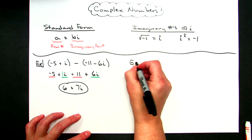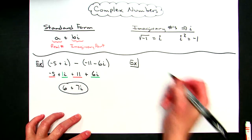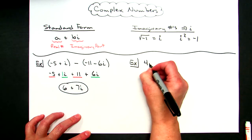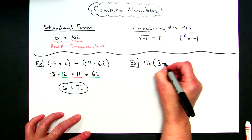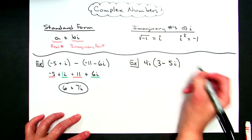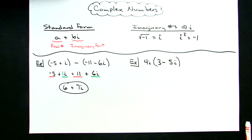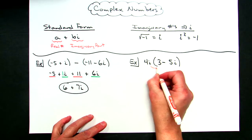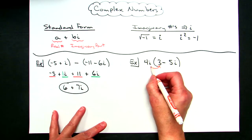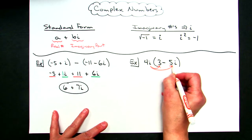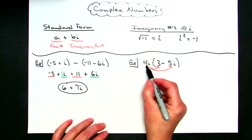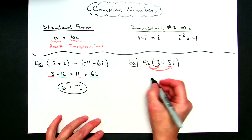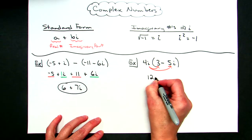Let's do one that involves the distributive property. If I had 5i multiplied by the quantity 3 minus 5i, the parentheses are the dead giveaway that I'm going to do some distributive property here. I'm going to take the 4i and multiply it by the 3, and also multiply the 4i by the 5i. Multiplying, 4 times 3 gives me 12i.